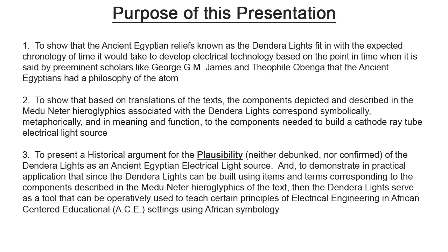The purpose of this presentation is threefold. First, to show that the ancient Egyptian relief known as the Dendera lights fits with the expected chronology of time it would take to develop electrical technology, based on when scholars like George G.M. James and Theophile Obinga say the ancient Egyptians had a philosophy of the atom. Second, to show that components in the Meduneta hieroglyphics correspond symbolically and in function to components needed to build a cathode ray tube electrical light source. Third, to present a historical argument for the plausibility of the Dendera lights and demonstrate that they can serve as a tool to teach electrical engineering principles in African-centered educational settings using African symbology.